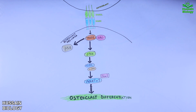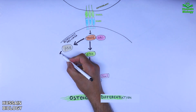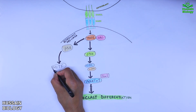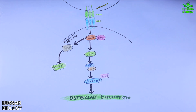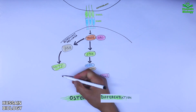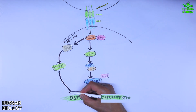In the second pathway, TRAF6 activates p38, which is the Mitogen-Activated Protein Kinase. After activation, p38 goes to the nucleus where it phosphorylates and activates the MITF protein, which then binds DNA to drive the expression of osteoclast differentiation factors.